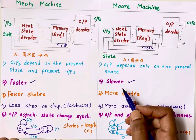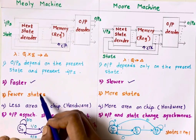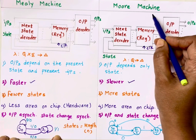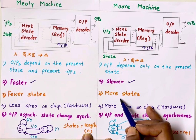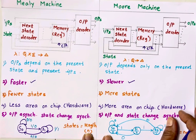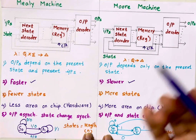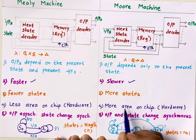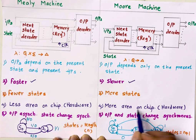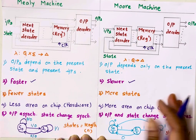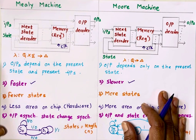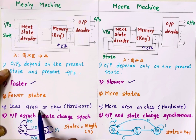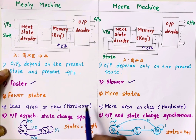When we design a circuit using a Mealy machine, fewer number of states are required. Whereas for a Moore machine we need more number of states, and when we have more states we need more flip-flops, which requires more area on chip or more hardware. In a Mealy machine we need fewer states, so less area on chip and less hardware is required.